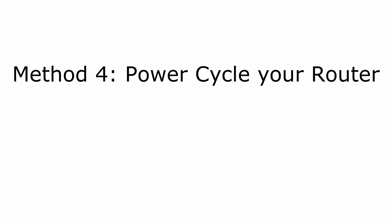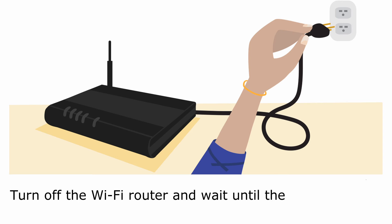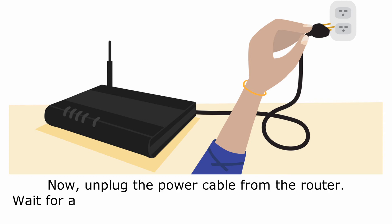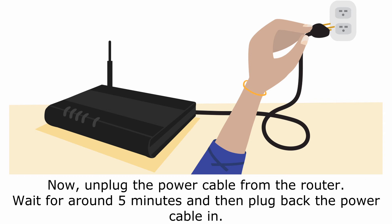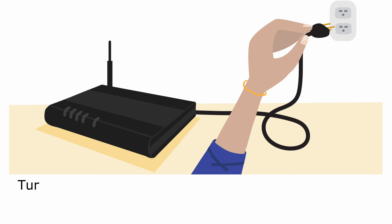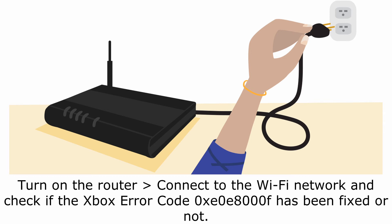Method 4: Power Cycle Your Router. Turn off the Wi-Fi router and wait until the LED indicators stop blinking. Unplug the power cable from the router. Wait for around 5 minutes and then plug the power cable back in. Turn on the router, connect to the Wi-Fi network, and check if the Xbox Error Code 0Z0E8000F has been fixed.